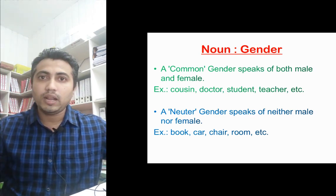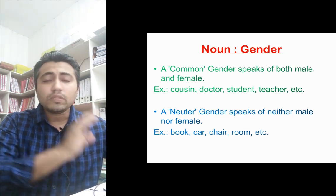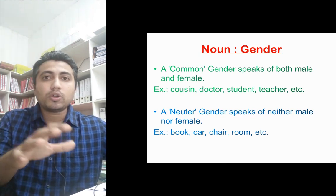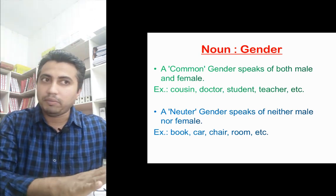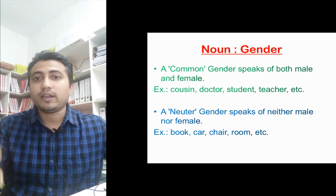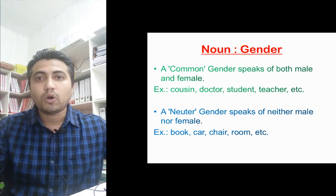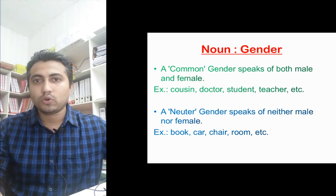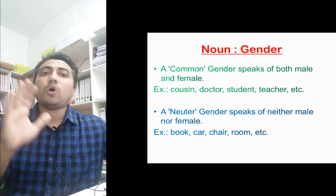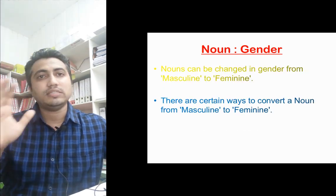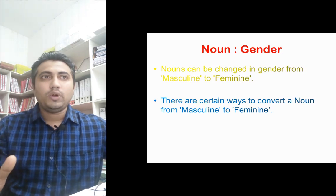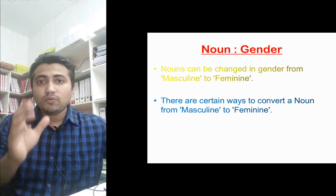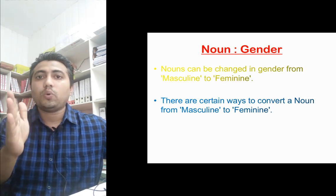The next one is neuter gender. Neuter gender means nouns that are neither male nor female — we can call them non-living things. For example, book is neither a male nor a female. Car, chair, room — all these things are neither male nor female, so that is why we call them neuter gender.